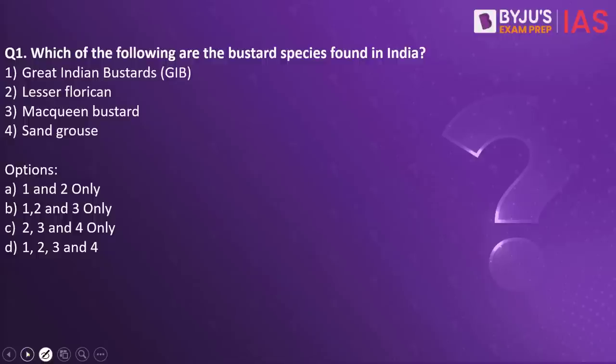Which of the following are the Bustard species found in India? Great Indian Bustard, Lesser Floricon, McKean Bustard, Sandcross? The answer to this is 1, 2 and 3 only.